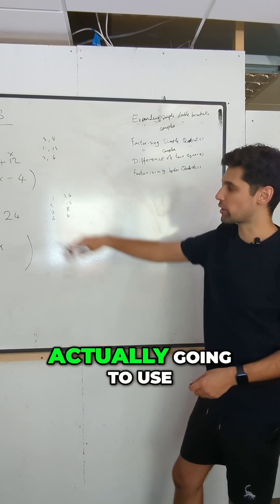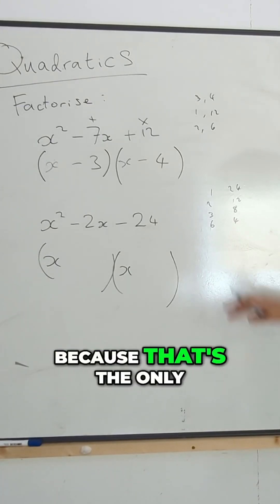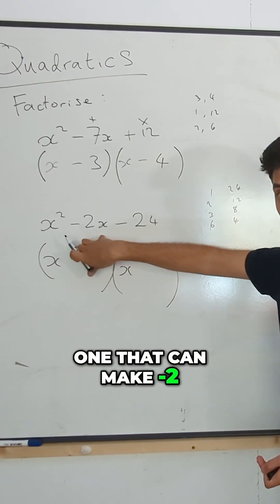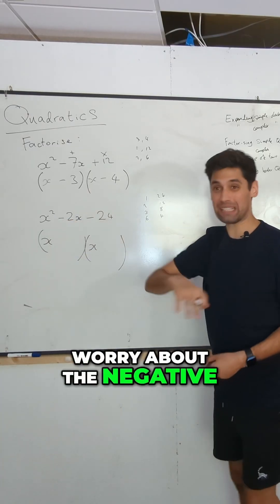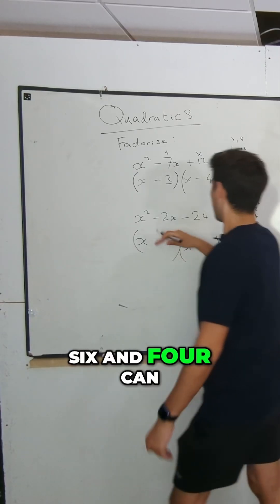Which of these pair of numbers are we actually going to use? 6 and 4. 6 and 4 because that's the only one that can make minus 2. Yes. Or just 2. Don't even need to worry about the negative at this stage. Right. 6 and 4 can make a 2.